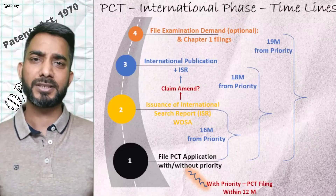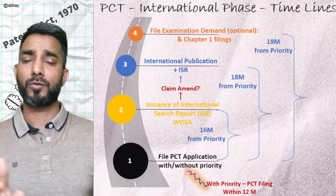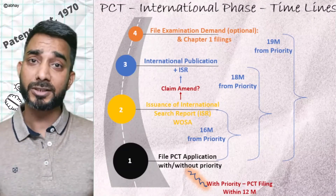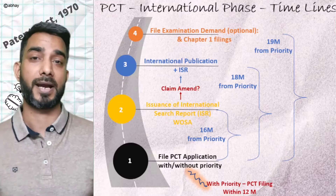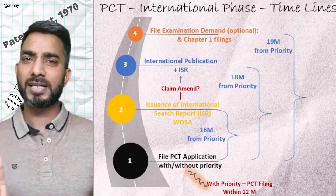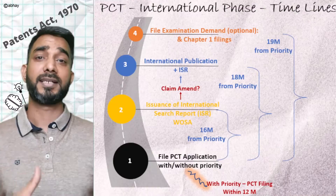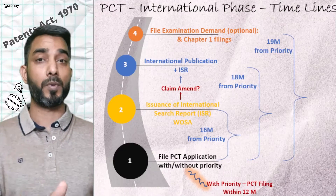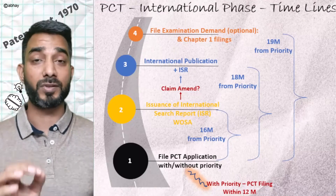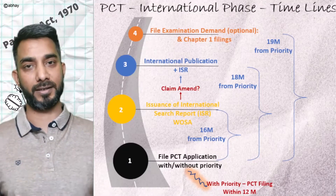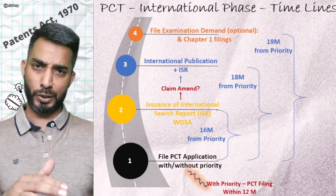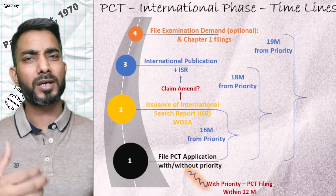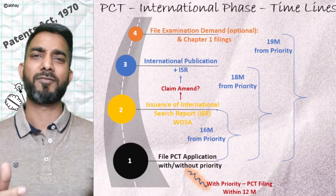A PCT application can be filed with or without claiming priority. If priority is claimed, the PCT application needs to be filed within 12 months from the earliest priority date. Once the application is filed, the ISA is selected and receives the search copy. The ISA then produces the ISR, preferably within 16 months from the priority date. At this stage, the applicant can either ignore the report or make changes to the claims to overcome any negative remarks in the ISR.